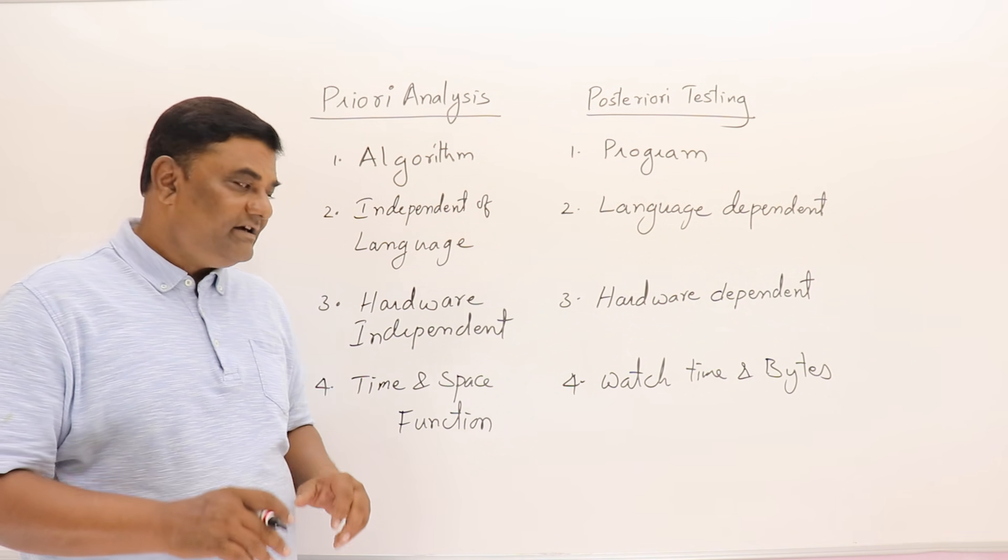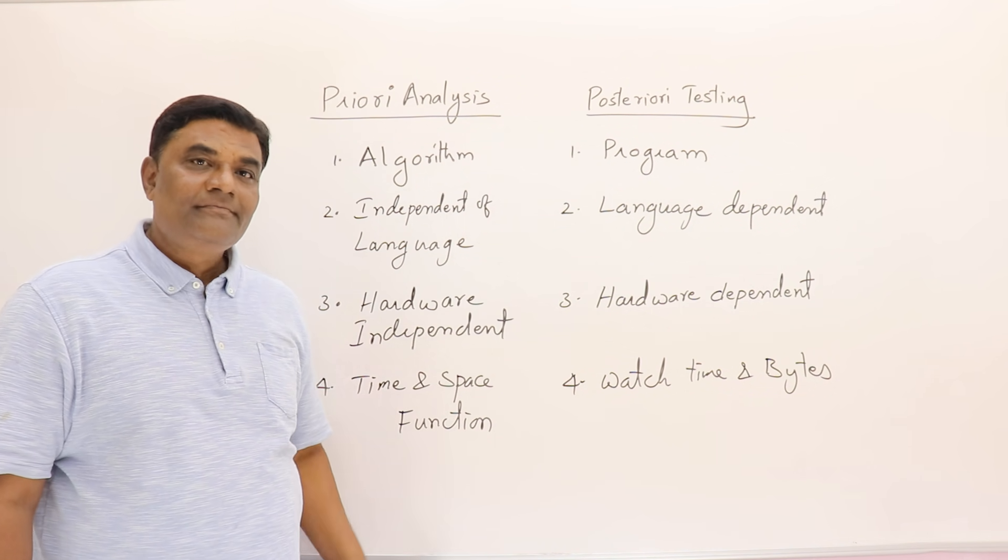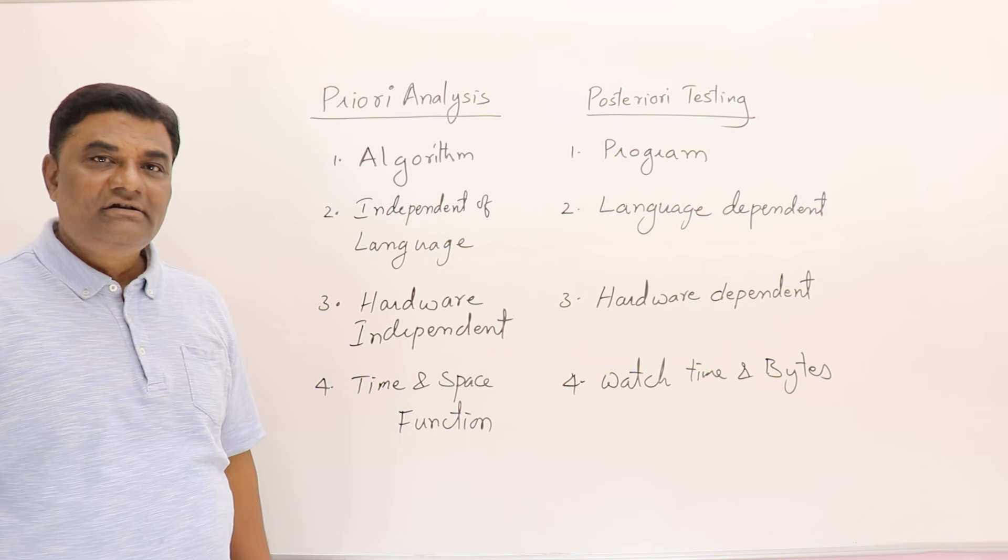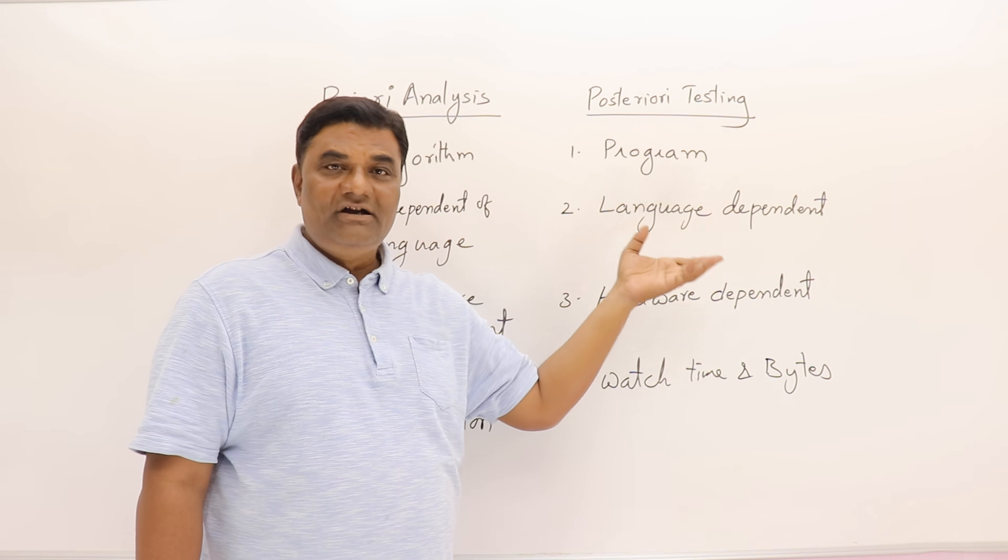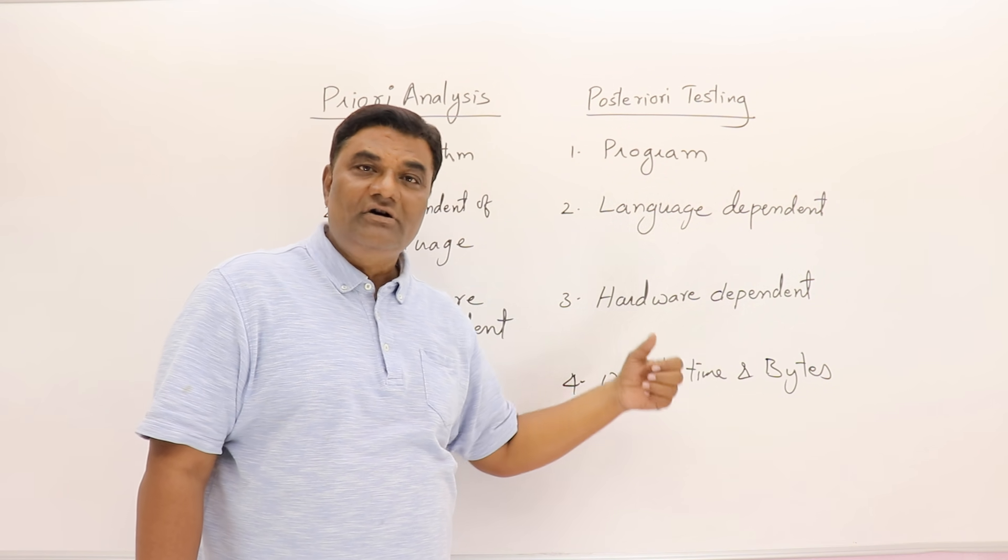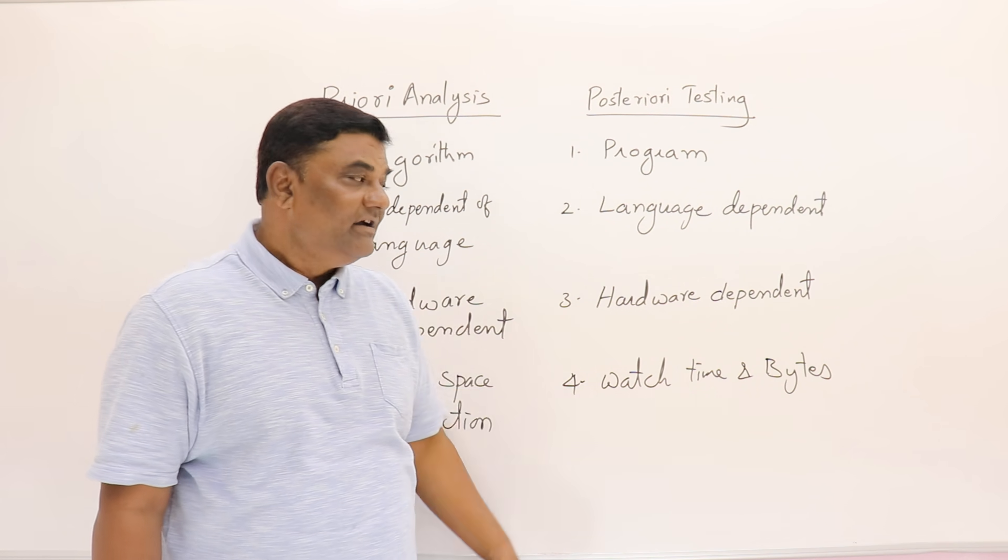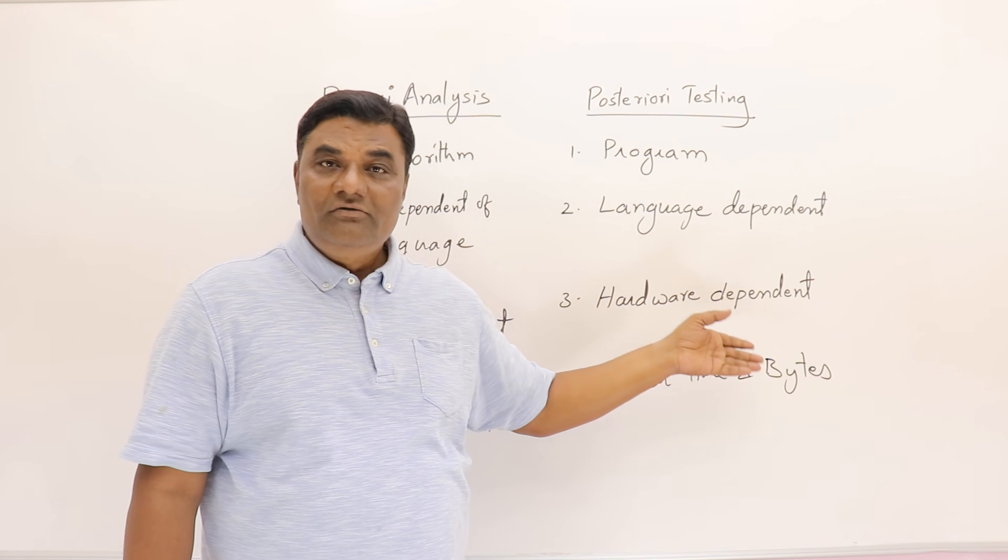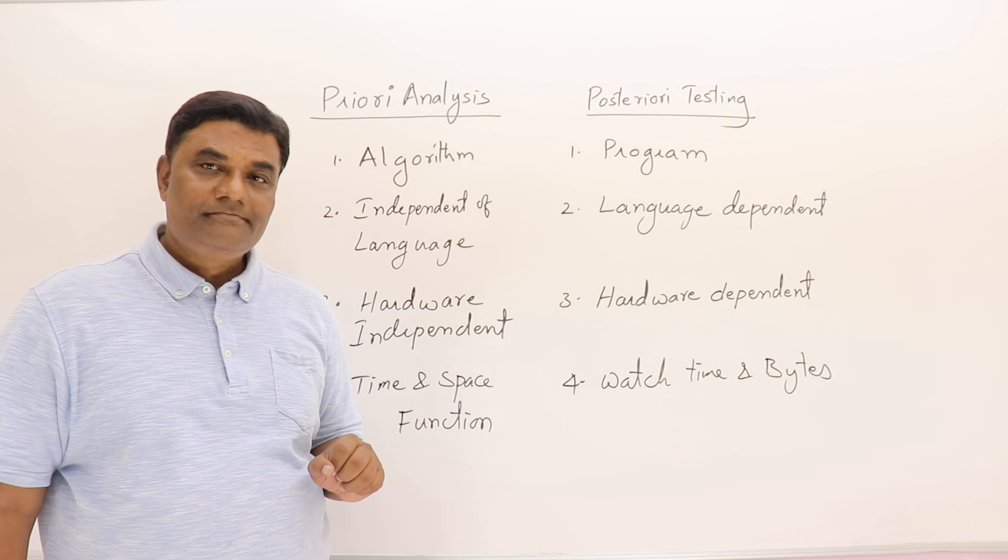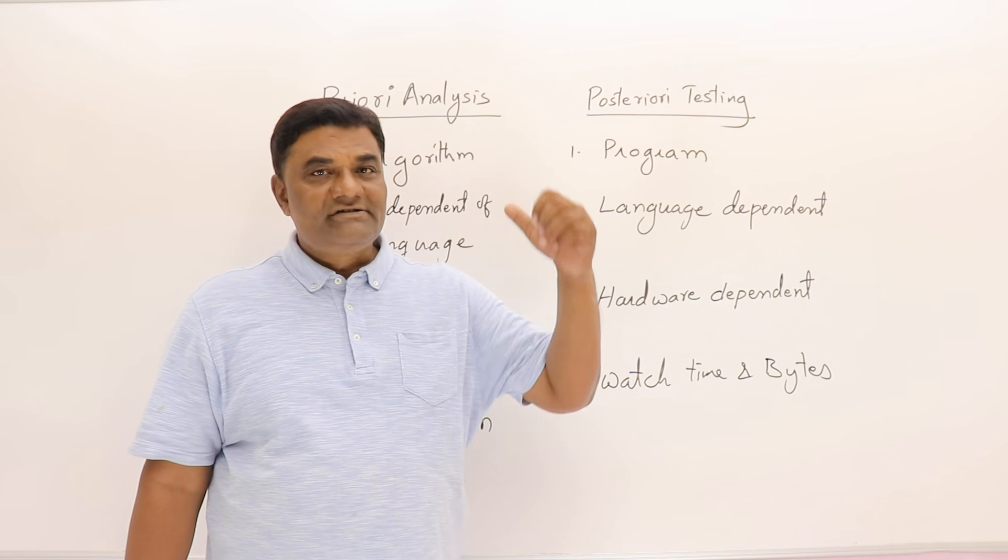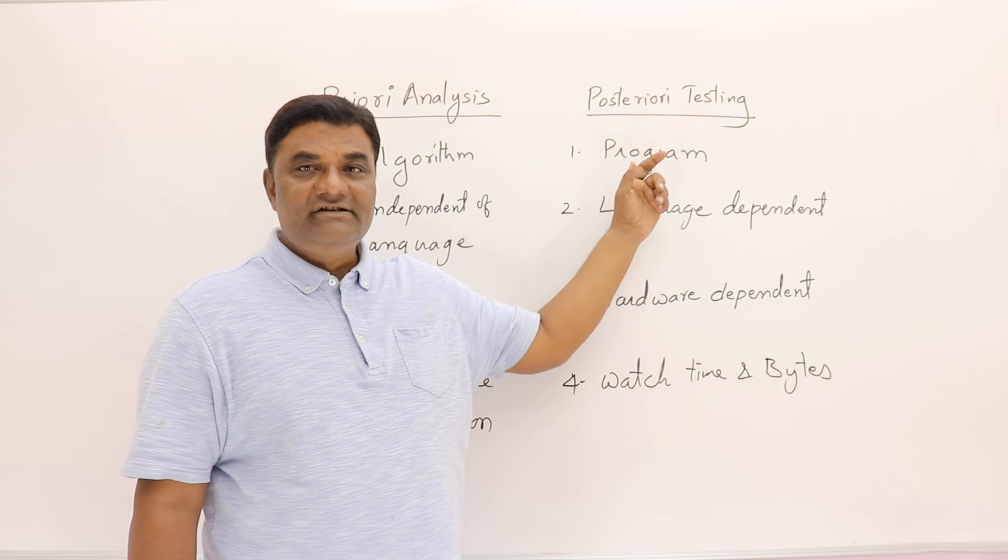The result of analysis - we may find out the time and space consumed by an algorithm. Testing is done on the program. We run and execute the program and check it, so we will know the actual time it is taking - how many seconds or milliseconds - and also the amount of memory it is consuming in terms of bytes. Priori analysis is done on algorithms and posteriori testing is done on programs.